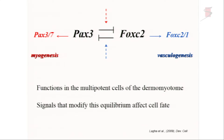Without going through all the genetic manipulations, we could show that Pax3 and FoxC2 reciprocally inhibit each other genetically. If we shift the balance genetically towards FoxC2, we get non-myogenic derivatives like vascular derivatives. If we shift the balance slightly towards Pax3, we shift into myogenesis. It's rather like a sumo wrestling match. We could show that the battle between FoxC2 and Pax3 keeps the cell in a multipotent state, but as soon as the equilibrium shifts one way or the other, the cell will tend to move into one pathway. We postulate that signals from surrounding tissues and from the somite itself that modulate this equilibrium will affect cell fate.